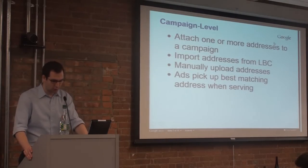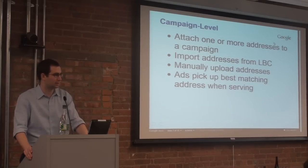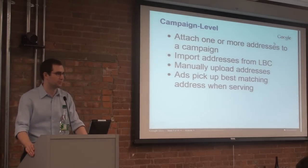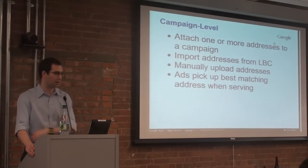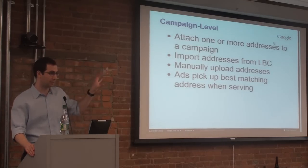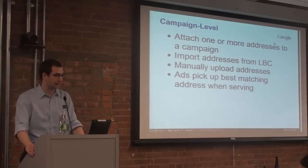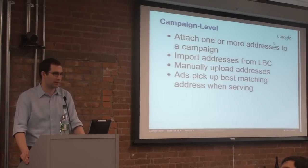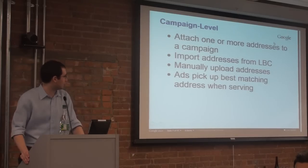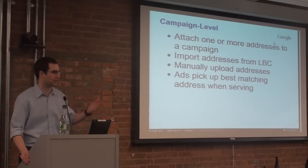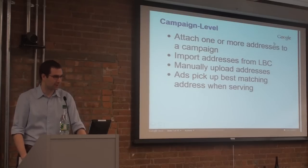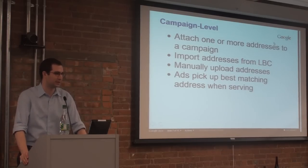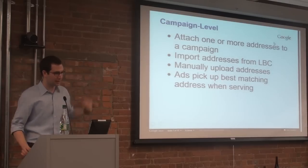At the campaign level, you attach one or more addresses directly to a campaign. You can import the addresses from LBC. So if you have an LBC account with 300 national chain stores across the country, you can import all 300 of those locations directly and see them in AdWords. Or you can manually upload addresses, but we do limit you to the manually created addresses — so if you need more, you need to have them confirmed and entered through the local business center. And then as I mentioned, ads pick up the best matching address when they serve — the Boston, New York example. So those are campaign level extensions — a location or multiple locations at the campaign level that can be picked up by any ads.